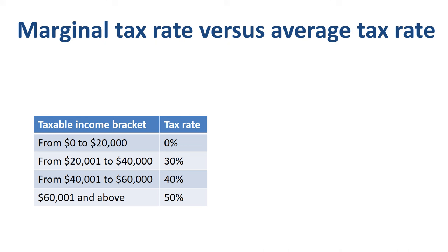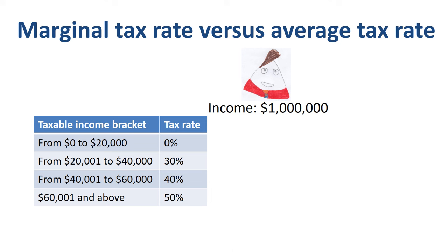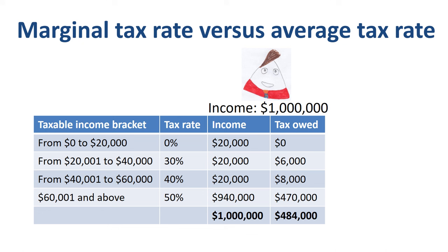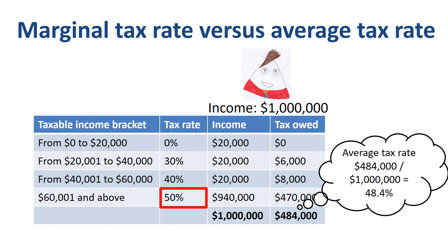Let's now look at someone with a much higher taxable income — Jim, with $1 million taxable income. Most of his taxable income is in the highest tax bracket. Only $60,000 is spread over the first three brackets; the remaining $940,000 is in the fourth bracket. His marginal tax rate is 50%, and his average tax rate is getting very close to that at 48.4%. Average tax rate is always lower than marginal tax rate in the progressive income tax system, but if you are a big earner, then they are getting very close.